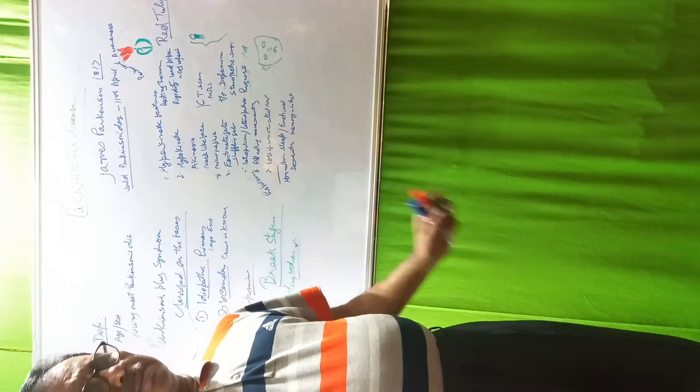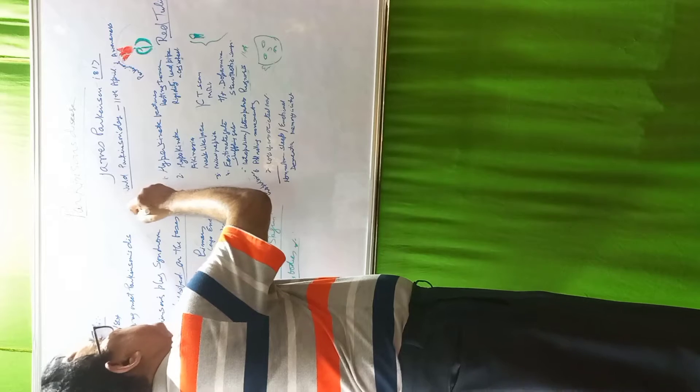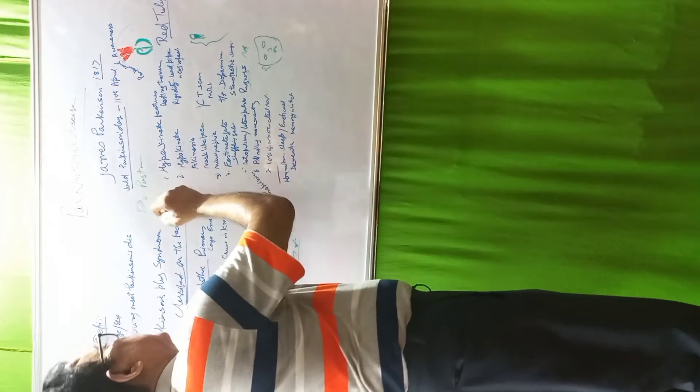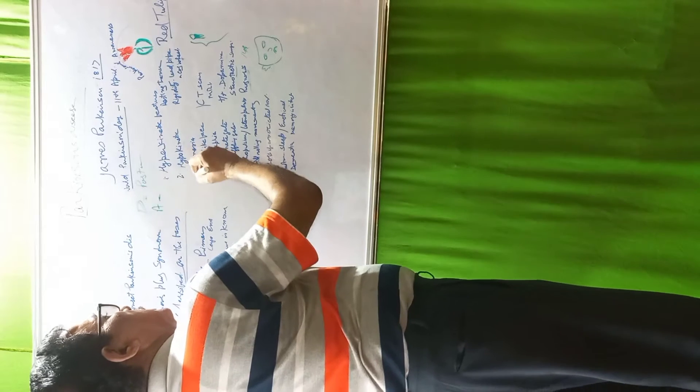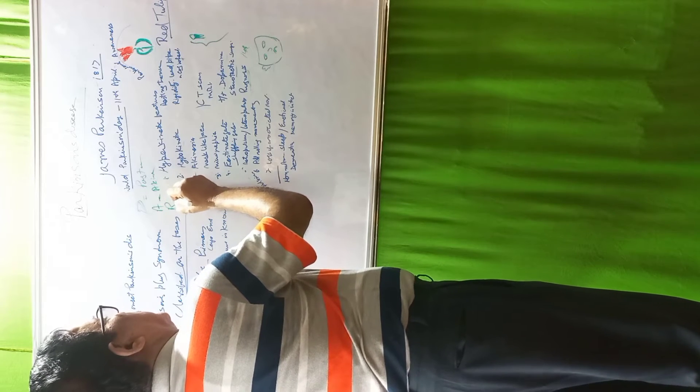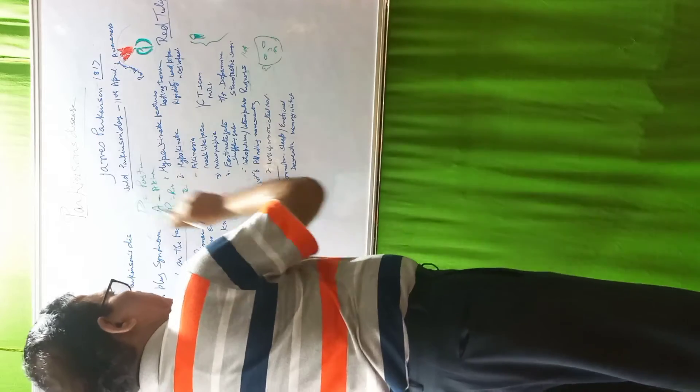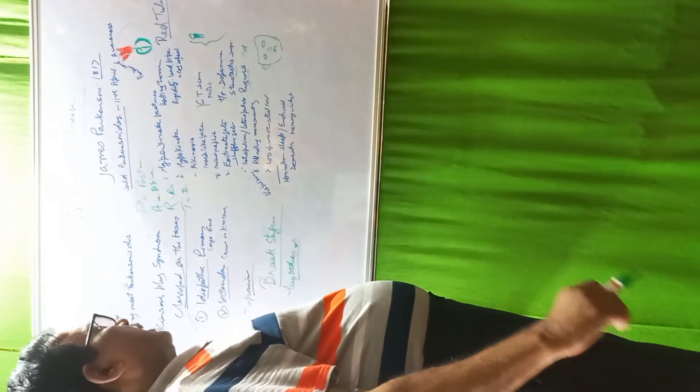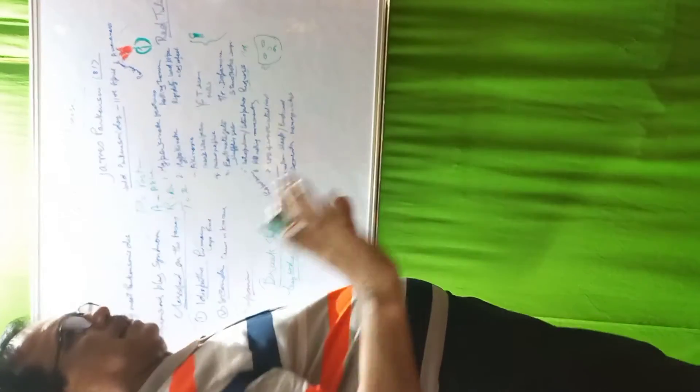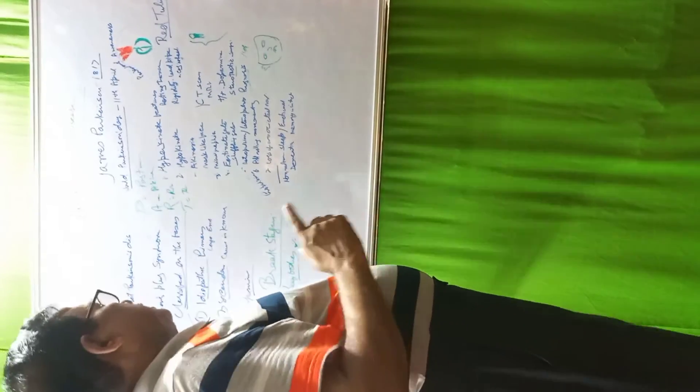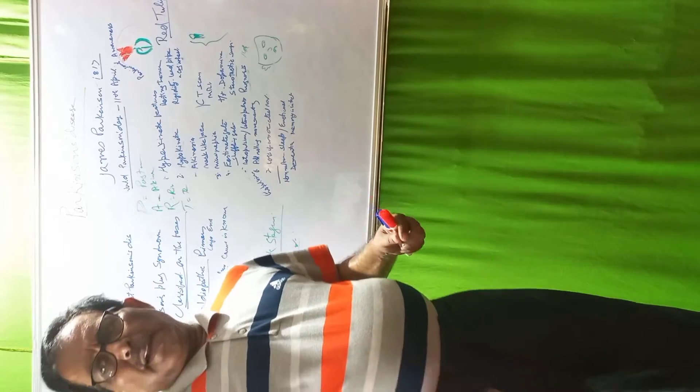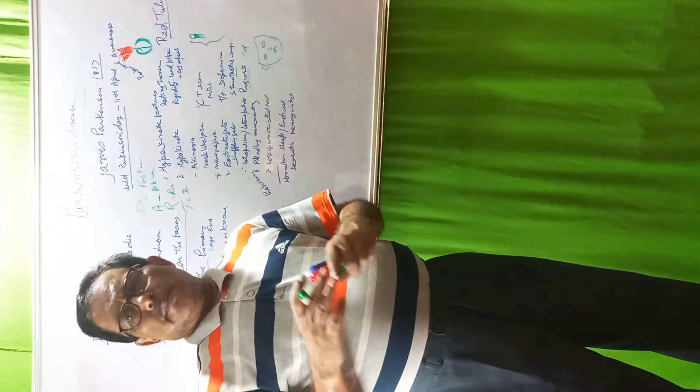Features of Parkinson's disease: P for Postural disturbance, A for Akinesia, R for Rigidity, and T for Tremor. PART. These four features are characteristic of Parkinson disease. The main thing is defect in dopamine. We know that for smooth muscle function, there is a balance between dopamine and acetylcholine.